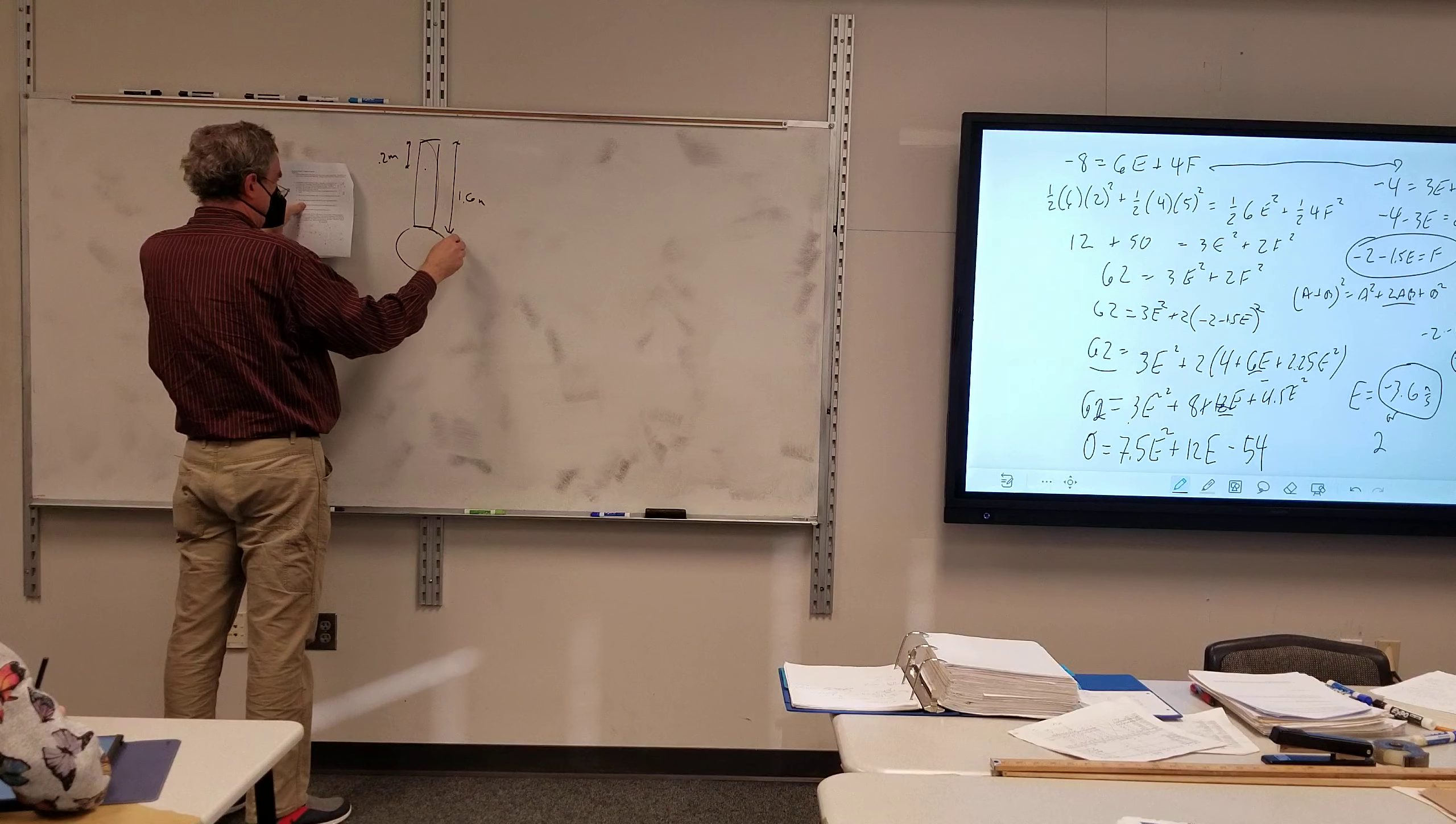62 equals 3E squared plus 8 plus 12E plus 4.5E squared. So now it becomes a quadratic equation. The quadratic equation, you use the quadratic formula, you set it equal to zero. To leave in the squares, you would get the E's on one side and non-E's on the other. But let's get it into quadratic formula form here. So that's 7.5E squared plus 12E minus 54.